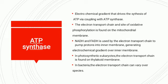In photosynthesis in eukaryotes, the electron transfer chain is found on the thylakoid membrane. In bacteria, the electron transfer chain can vary across species.